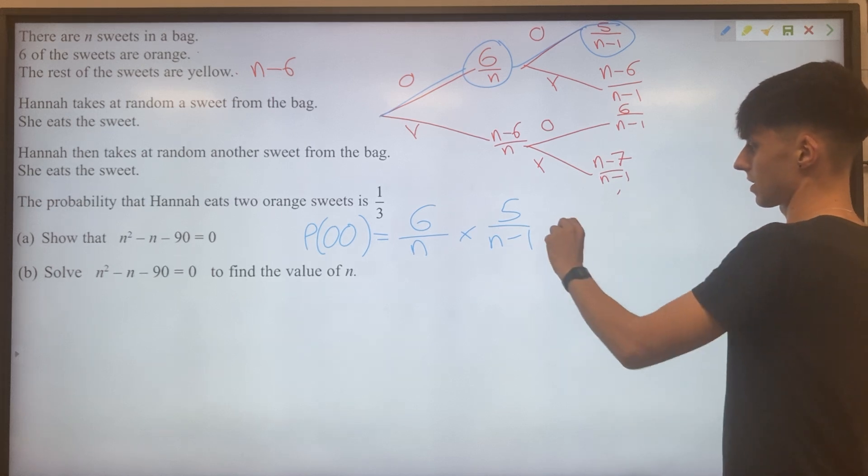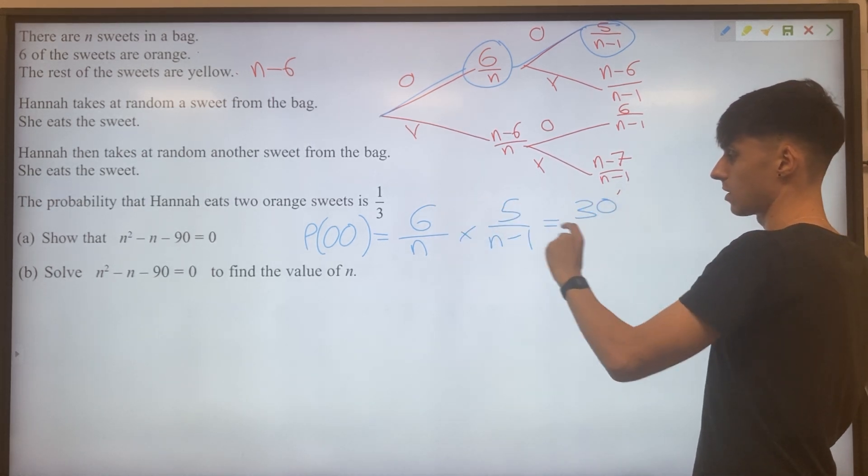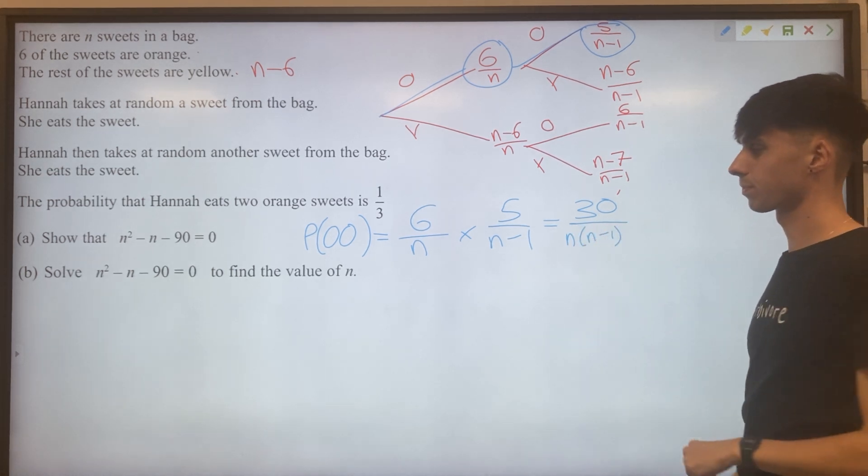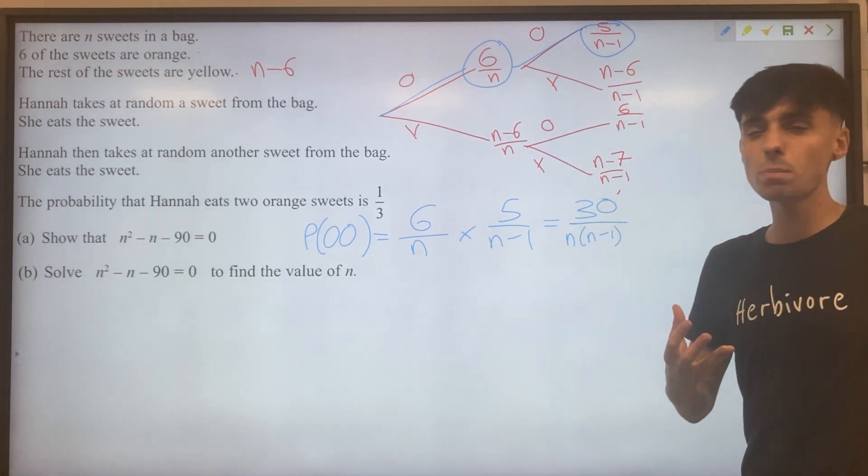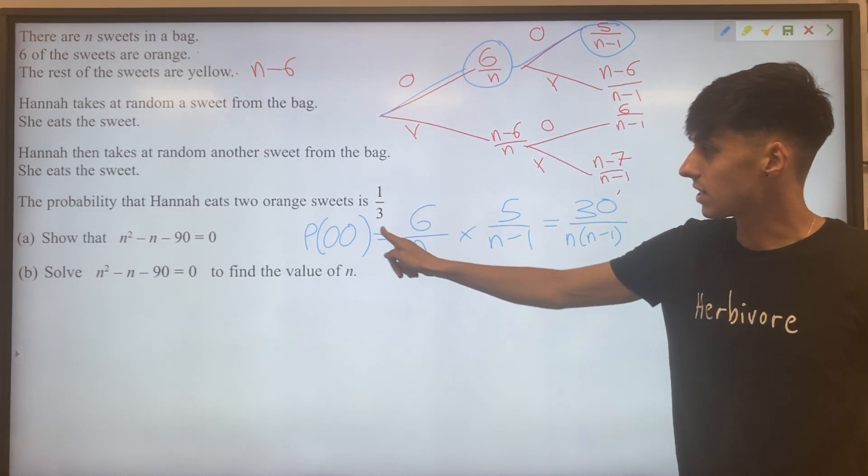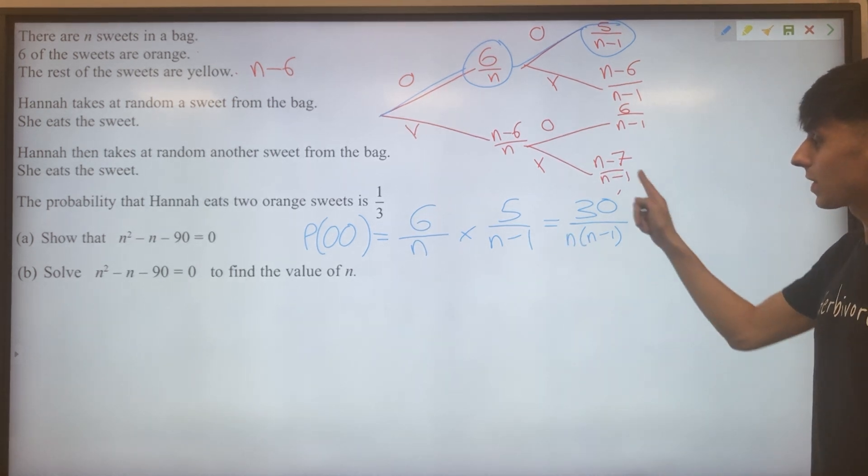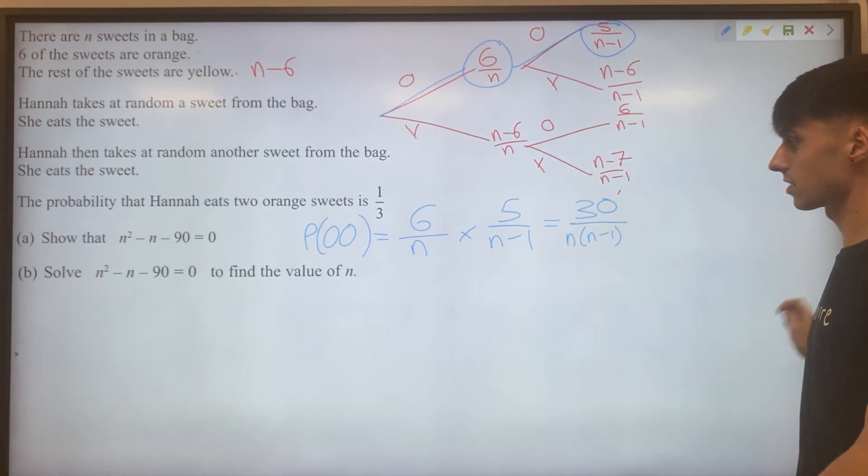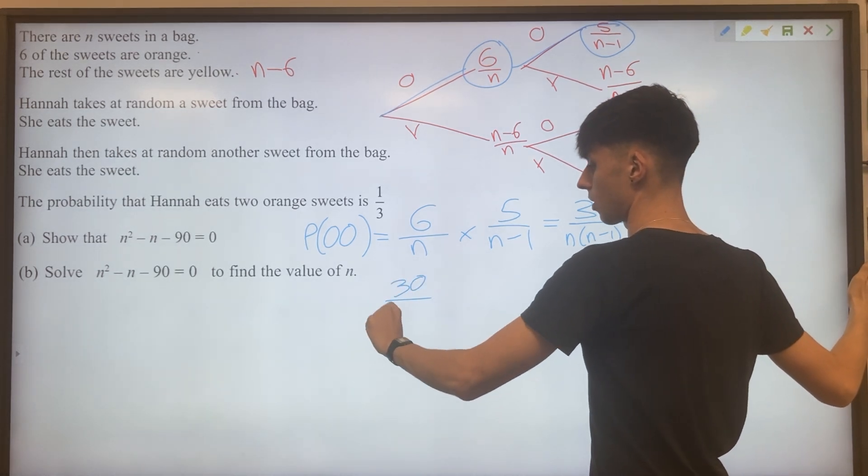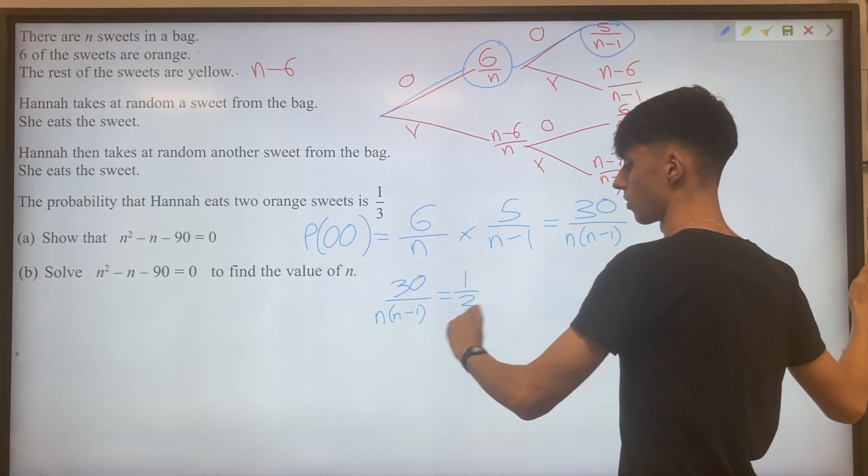Let's try and simplify this a little bit by putting into one fraction. So 30 over N brackets N minus one. We can do a bit more with this though. They've told us this probability of two orange sweets is one third. So why don't we equate this to one third and see what happens.